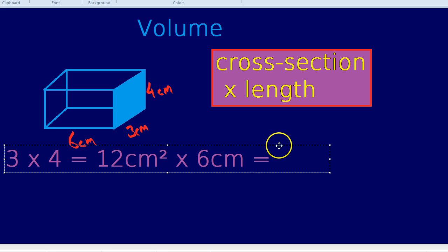Now, you can see, we're not only going to get a number, we're going to get a unit. 12 times 6 is 72.